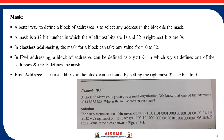The first address in the block can be found by setting the 32-n right-most bits in the binary notation of the address to 0s. For example, with /28, the value of n is 28, so we set 32-28 = 4 right-most bits to 0, giving us the first address of the block.